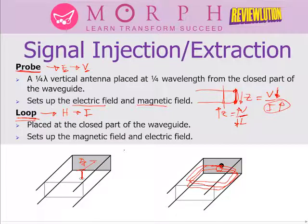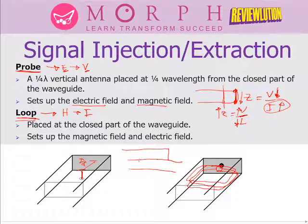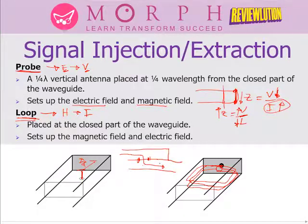The hole or aperture method will be discussed in the directional coupler section. If two waveguides are coupled together, a hole or aperture can be placed so that a signal from one waveguide enters the other. This can be used to inject or extract signals from the waveguide.